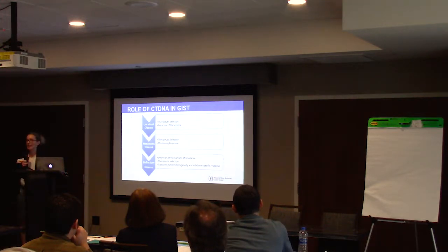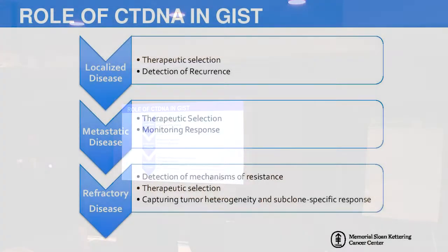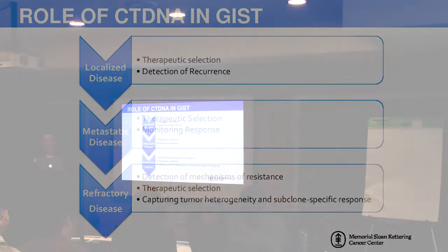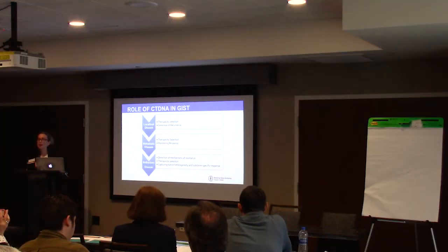What is the role of ctDNA in GIST? In the localized disease setting, I think it has a role to play in potentially helping with therapeutic selection and detection of recurrence and minimal residual disease. However, I think this is the most difficult area — our detection levels are not there yet.